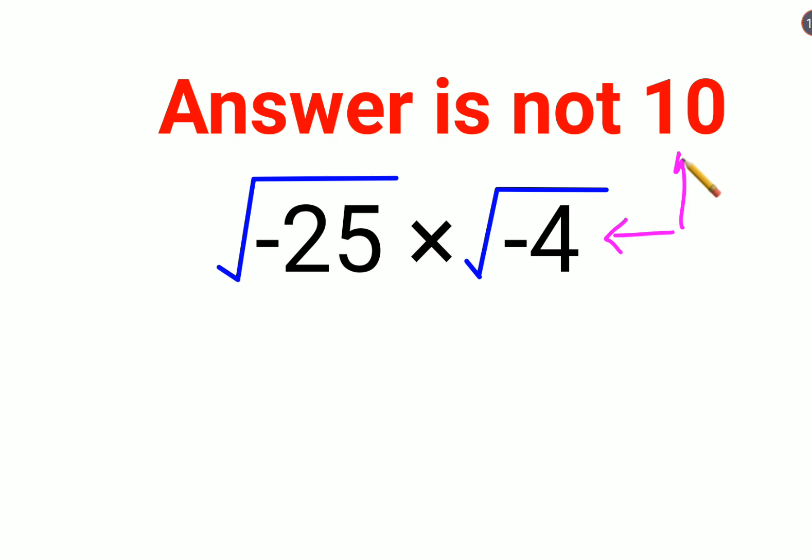A lot of people think that the answer for this one is supposed to be 10, but that is incorrect. Now why people think like that is basically they put everything under one root, which is minus 25 into minus 4.